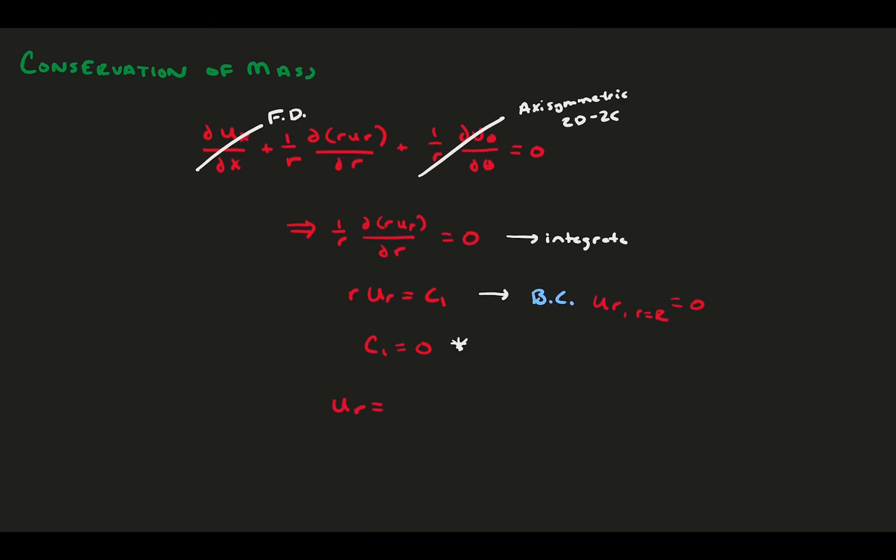We find that throughout the entire flow field, the in-plane radial velocity is zero. Recall that we had a very similar result for channel flow, with the y velocity.